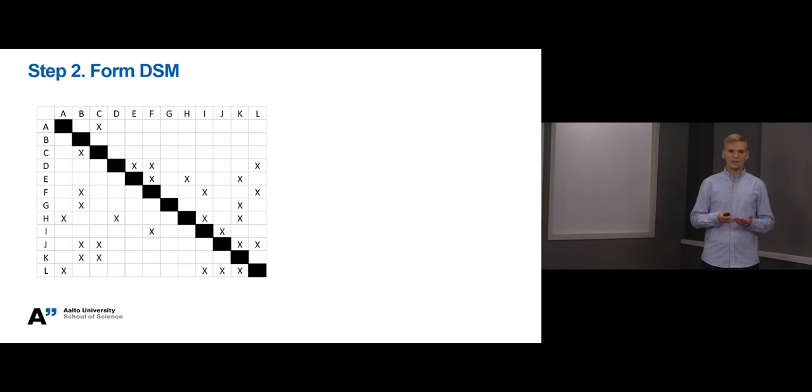Alright, here we have documented the interactions of project alpha and formed a matrix representation. So how do we interpret this matrix? Well in general, rows indicate the information that different tasks require. In turn, columns indicate the information the different tasks produce for other tasks. I will give you some examples.